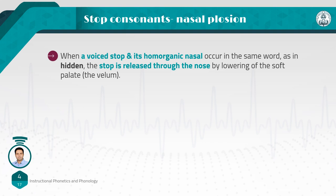In a word like 'hidden,' we have a voiced stop /d/ and its homo-organic nasal /n/. Both are alveolar — they share the same place of articulation, so we say they are homo-organic. In this situation, the stop /d/ is released through the nose, not through the mouth. When we say just 'd,' the release is through the mouth, but in 'hidden,' I release the stop through my nose — not 'hidden,' but 'hidden.' This is called nasal plosion.